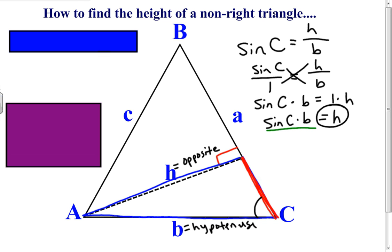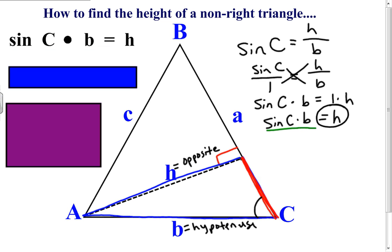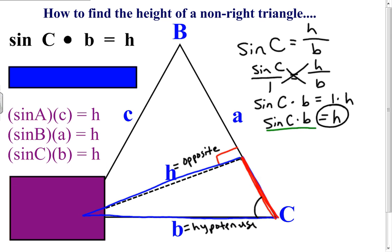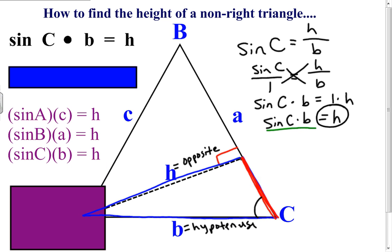Here's another way to get the height — we can do the sine of angle C times b. As you can see in all three cases: you can work the sine of angle A times c, or the sine of angle B times a, or finally the sine of angle C times b. All three give you the exact same h value.